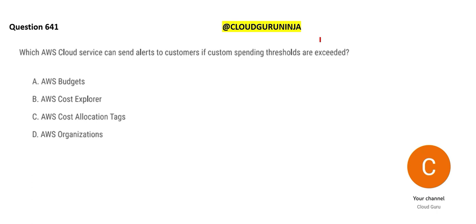The next question: what cloud service will you use to alert customers if their spending thresholds are exceeded? For example, you decided to run your workload using $5,000 per month, but on October 25th you see that you have already spent $4,800 — you are going to overshoot your budget. AWS Budgets is the service for that. Cost Explorer will tell you a breakdown of what you spent — how much on which services — but that is different.